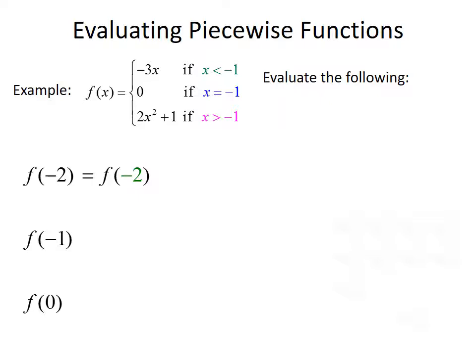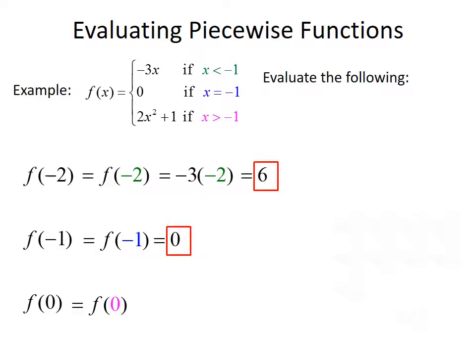Using the function negative 3x, we plug negative 2 in for x, giving us negative 3 times negative 2, which simplifies to positive 6. To evaluate f of negative 1, we find that x equals negative 1 is the middle domain, so the middle formula gives us f of negative 1 equals 0. Finally, to evaluate f of 0: since 0 is greater than negative 1, we use the third formula, 2x squared plus 1. Plugging in 0, we get 2 times 0 squared plus 1, which simplifies to 1.